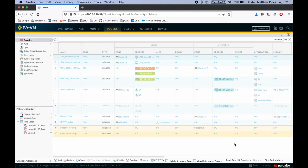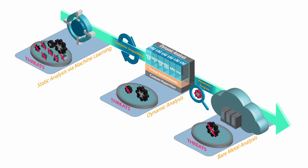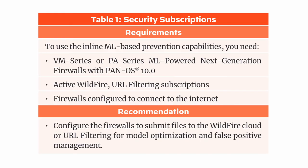While the deep analysis and source of truth remain in the cloud, real-time decisions can be enacted at the control point of the next-generation firewall. Some requirements to use the inline machine learning based prevention capabilities are a VM series or PA series machine learning powered next generation firewall with PAN OS 10, an active WildFire license, URL filtering subscriptions, and your firewalls must be configured to connect to the internet. It is recommended to configure the firewalls to submit files to the WildFire cloud or URL filtering for model optimization and false positive management.